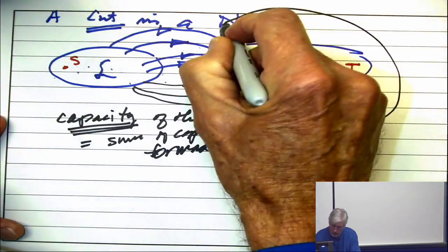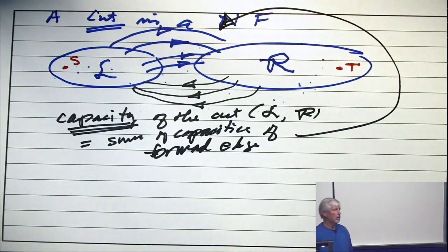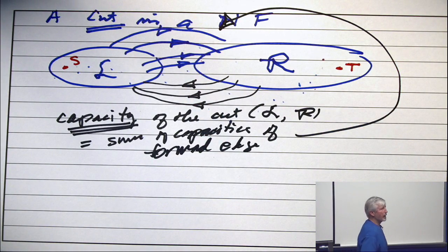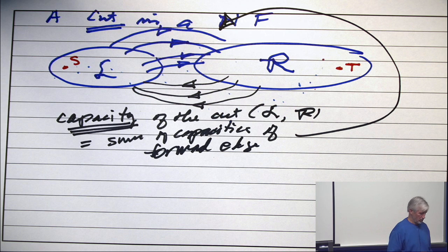Only those edges. Ignore the backward edges. That's the notion of capacity.